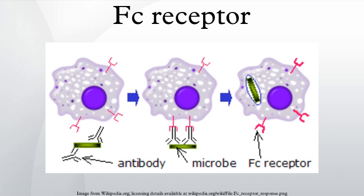Research has suggested that this receptor plays a role in the homeostasis of IgG serum levels. Only one FC receptor belongs to the FcαR subgroup, which is called FcαRI. FcαRI is found on the surface of neutrophils, eosinophils, monocytes, some macrophages, and some dendritic cells.